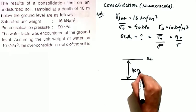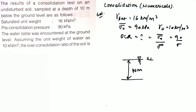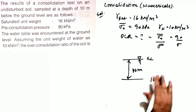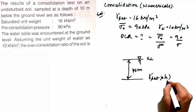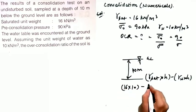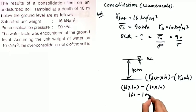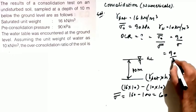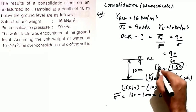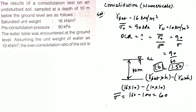At 10 meters below ground level with the water table at the surface, the effective stress equals γ_sat × h minus γ_w × h, which is 16 × 10 minus 10 × 10, giving 160 minus 100 equals 60 kPa. So OCR equals 90 divided by 60 equals 1.50. This is the required over-consolidation ratio, and it is given in option B.